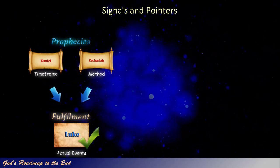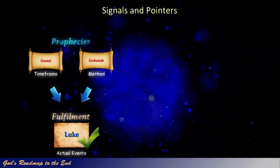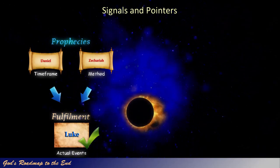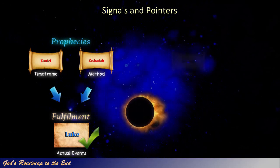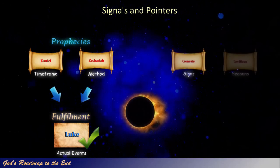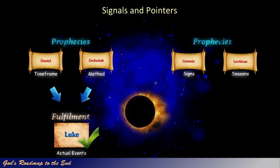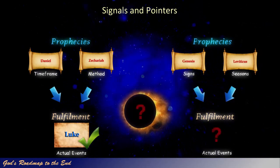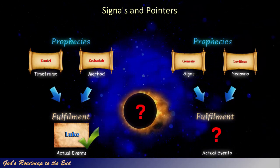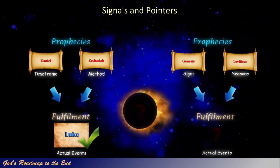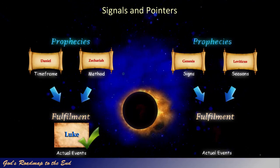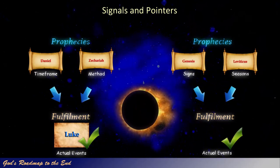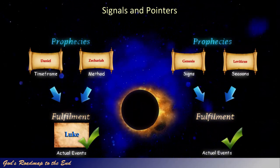If God's word is truly reliable, we would also expect to see God providing a heavenly signal to mark the fulfillment of his appointed times, as prophesied in Genesis 1 verse 14 and Leviticus 23. So, can we find any evidence for such a celestial signal? How exactly did God mark these appointed times that were fulfilled by Israel's Messiah? It is truly amazing to discover that God did indeed mark the spring season of feast days with a very unusual celestial event.